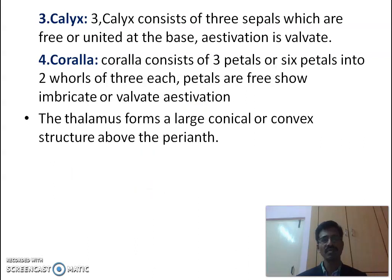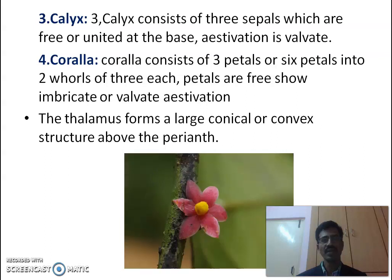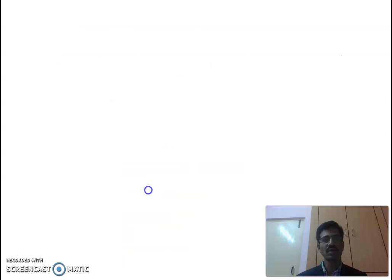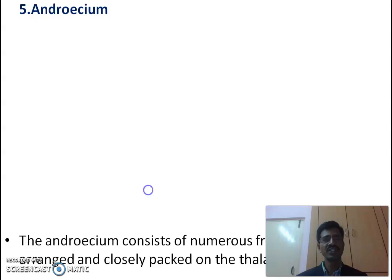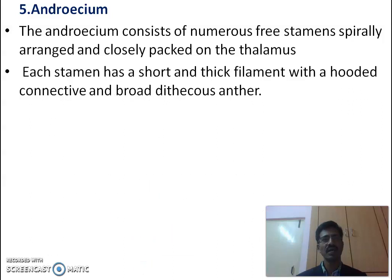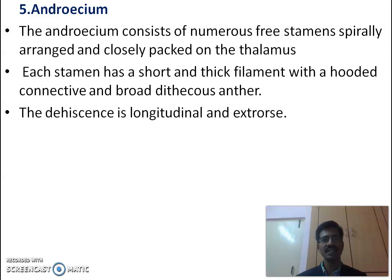The thalamus forms a large conical or convex structure above the floral area. In the androecium, numerous stamens are arranged spirally. Each stamen has a short and thick filament and a broad connective. Introrse anther is observed and dehiscence is longitudinal and extrorse.